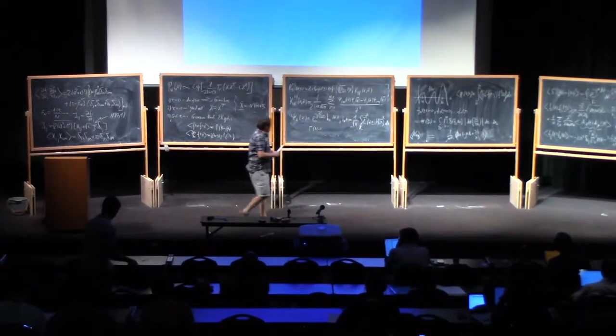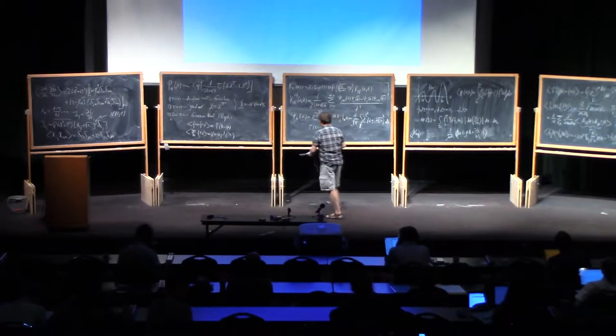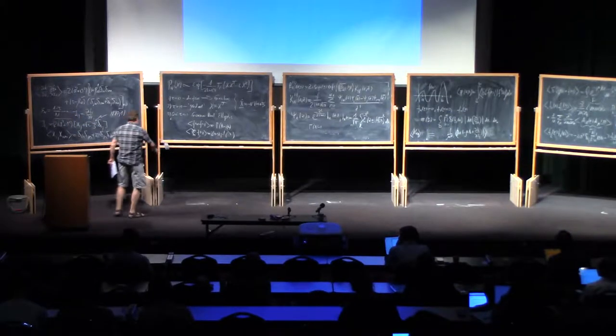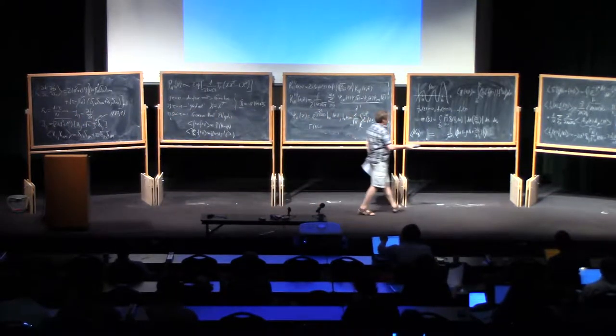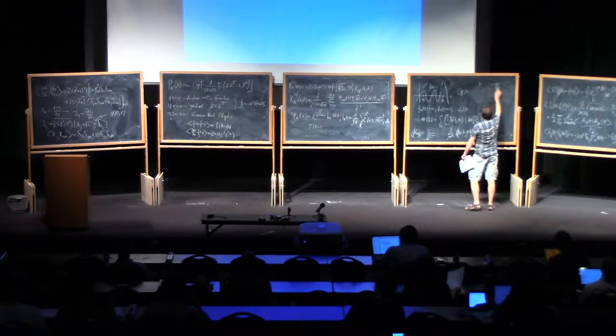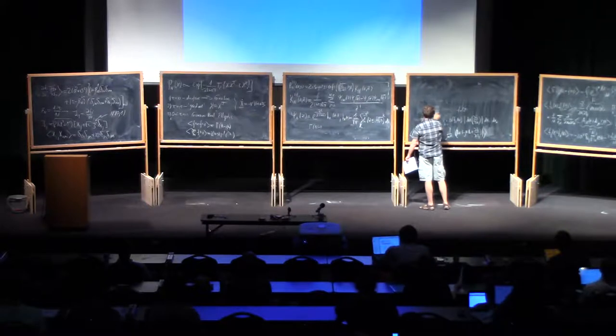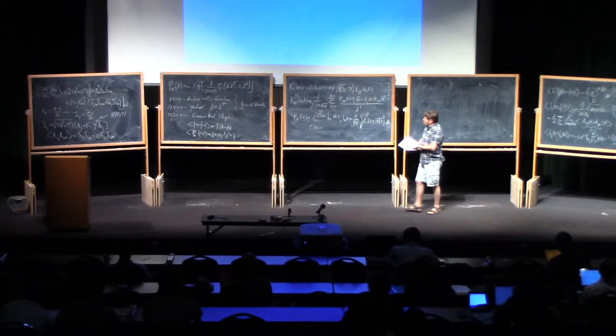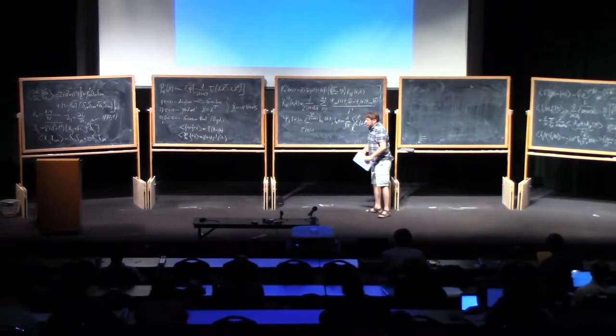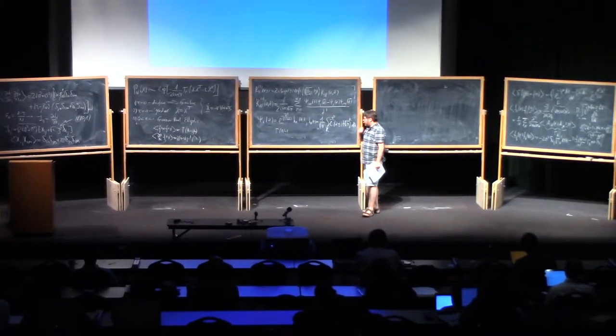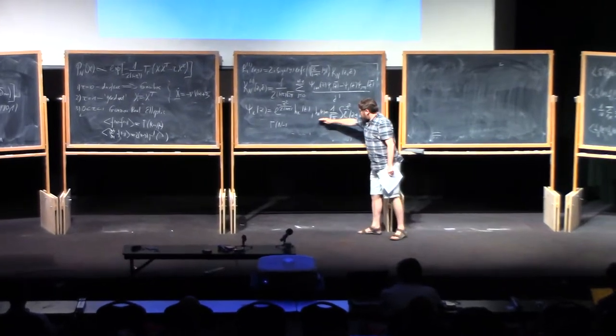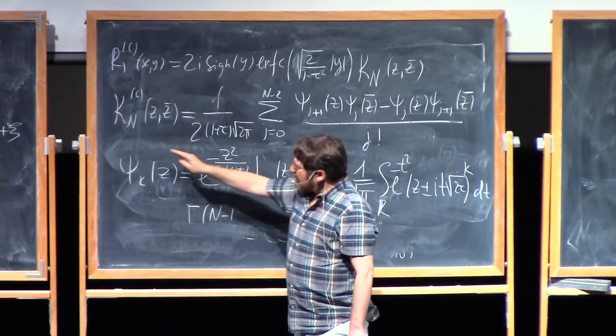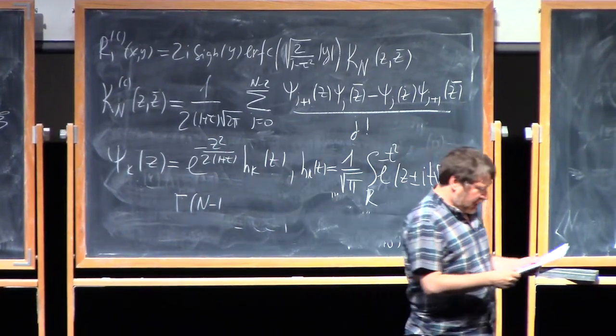Okay, let us continue. So we discussed this representation for the density of complex eigenvalues, and I mentioned that there is a similar formula for the density of real eigenvalues of this elliptic ensemble. Now why it's called elliptic, if one considers it's slightly more involved but not really much more involved, using this integral representation of Hermite polynomials, substituted here we can find asymptotic expression for the kernel.